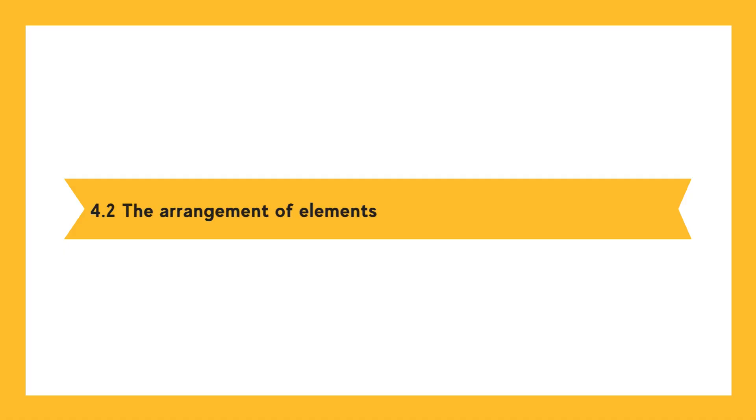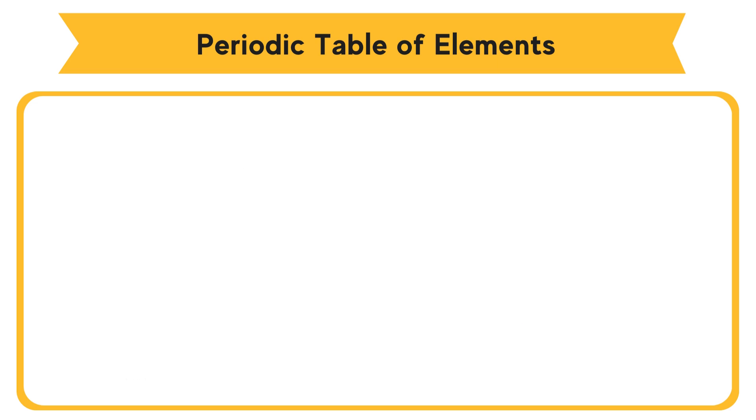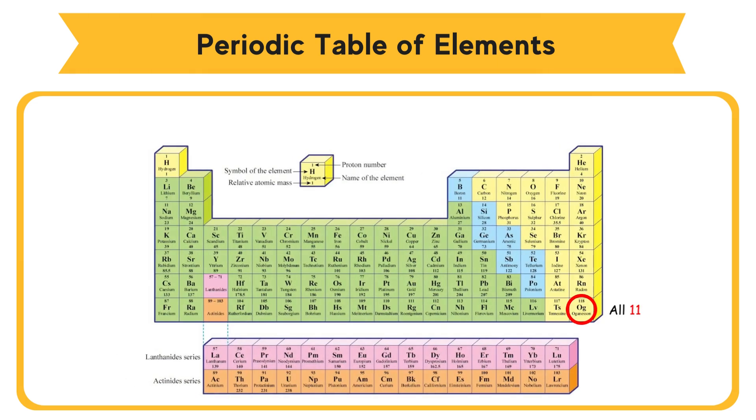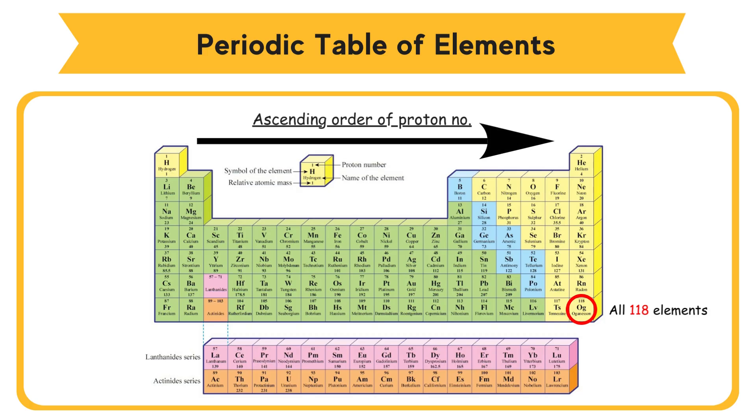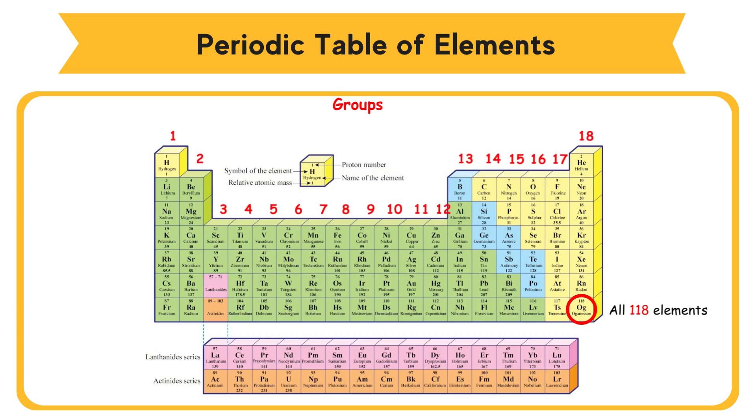4.2 The Arrangement of Elements in the Periodic Table of Elements. All 118 elements are arranged in the ascending order of proton number from left to right. The vertical column is called Group.